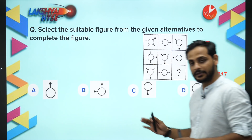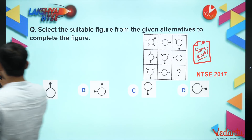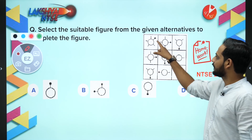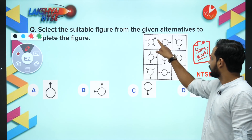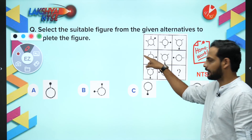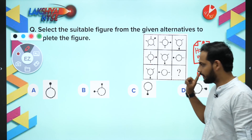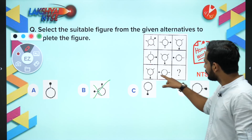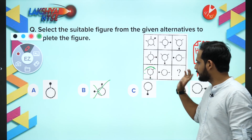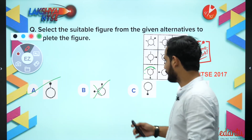Before moving ahead, let me discuss the previous class homework question. If you notice carefully, earlier there were five lines, then four lines, then three lines, and the dot is moving clockwise. Here also: four, three, two - dot moving clockwise. So the last part should have only one line, and since it has to move clockwise, the third point should be here - so option A is the correct answer.